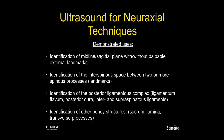The demonstrated uses of ultrasound for neuraxial techniques include identification of the midline and sagittal plane with or without palpable external landmarks — for example, in someone who is pregnant and/or obese — identification of the interspinous space between two or more spinous processes, identification of the posterior ligamentous complex, which includes the ligamentum flavum, the posterior dura, and the interspinous and supraspinous ligaments, as well as identification of other bony structures, which can include the sacrum, the lamina, and the transverse processes, which can be utilized for other regional techniques such as paravertebral blocks.